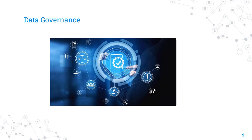The third issue that normally occurs during MDM implementation is incomplete data governance. This is a very big and common issue across all MDM projects, because it involves so many stakeholders, business users, and departments. It is very difficult to get everyone on the same page, which is why incomplete data governance is a frequent challenge.